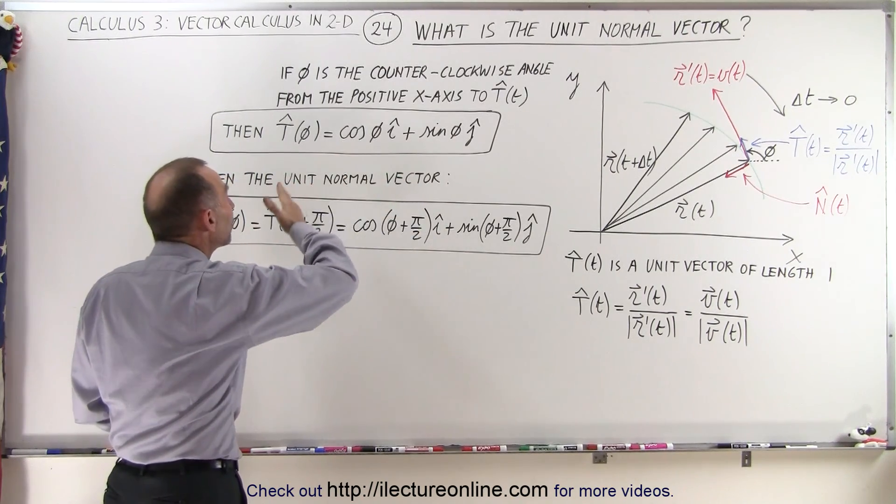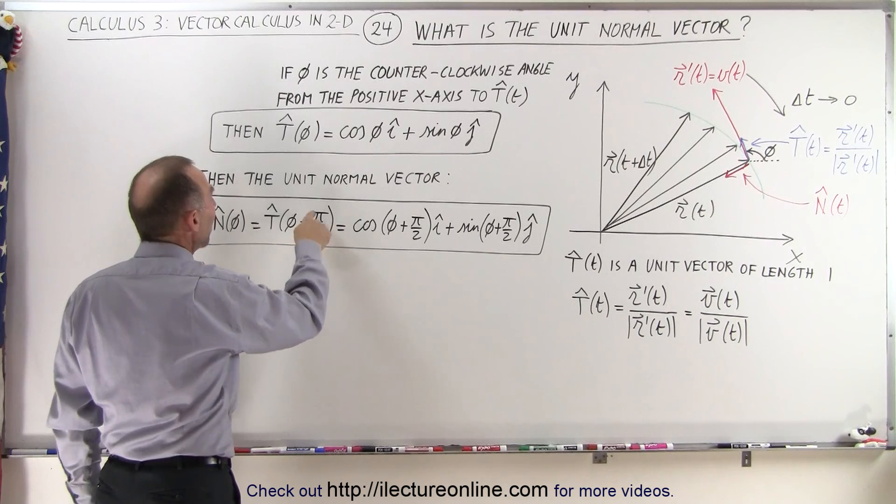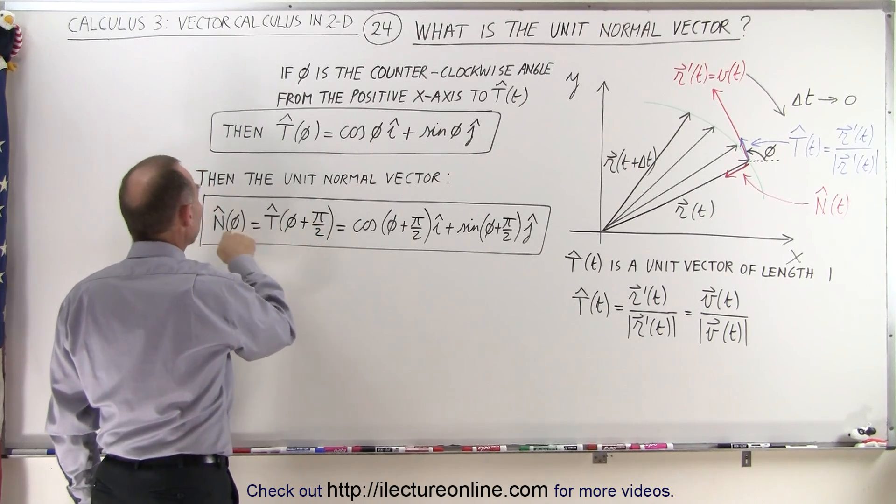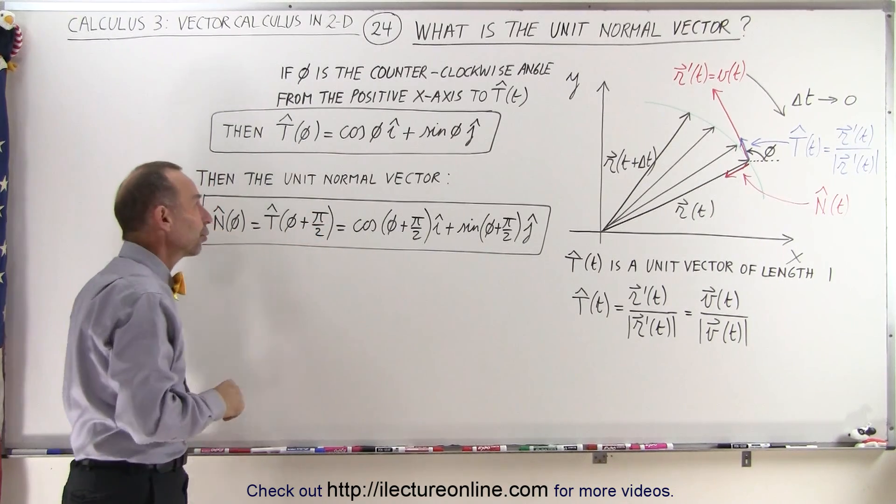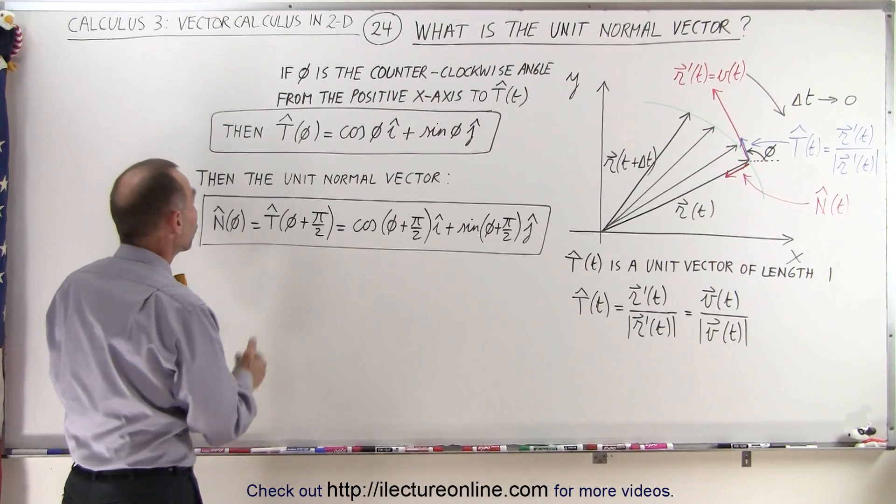And if we then rotate that through a 90-degree angle, which is pi over 2, if we then add pi over 2 to the angle, we then get the normal unit vector, or the unit normal vector as we say.